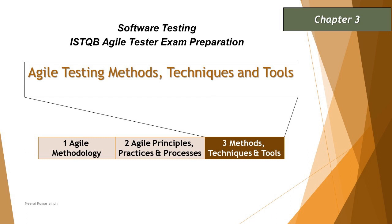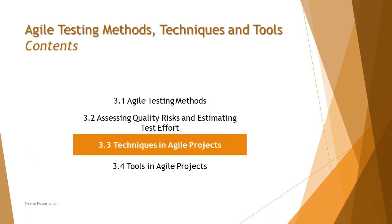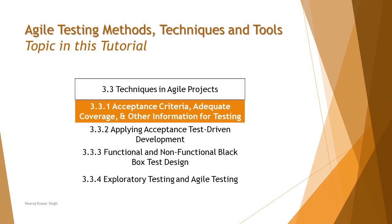Hello everyone, greetings for the day, and welcome back to another tutorial on the Agile Tester Extension Certification. Today we are looking into the next topic, which is the third chapter of the series: 3.3 Techniques in Agile Projects. The first topic we are talking about is acceptance criteria, adequate coverage, and other information for testing.